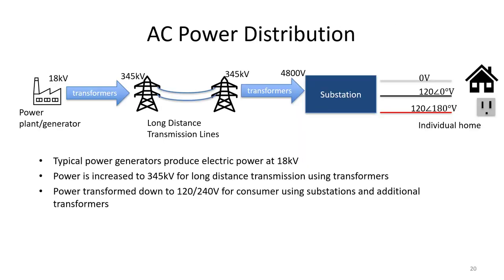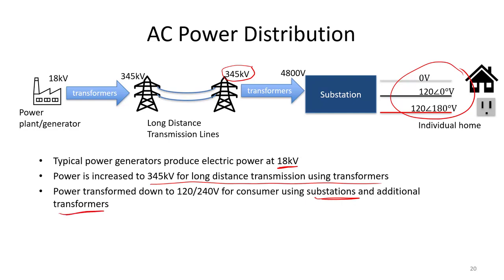Power plants actually produce electrical power at a voltage around 18 kilovolts — very different from the 120 V RMS in our power outlets. For long-distance transport, we actually increase the voltage even higher, up to hundreds of kilovolts, to avoid losses in transmission. We then need to take this power from 345 kilovolts all the way down to 120 volts, using substations and transformers through several steps.